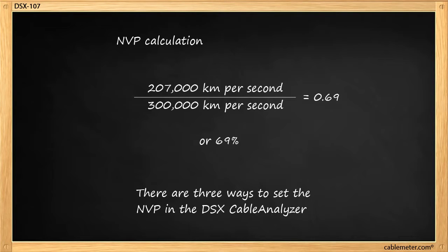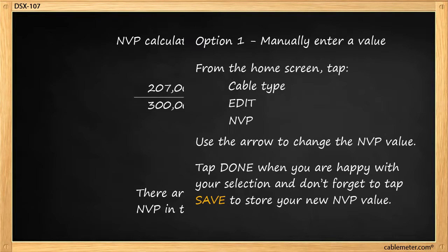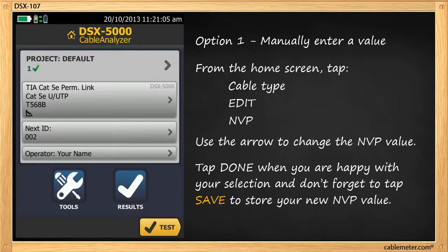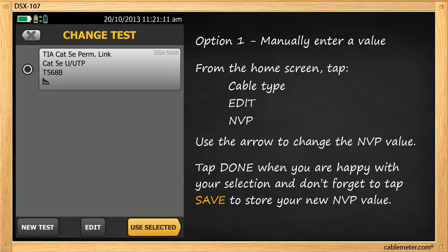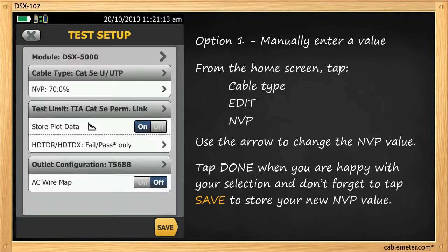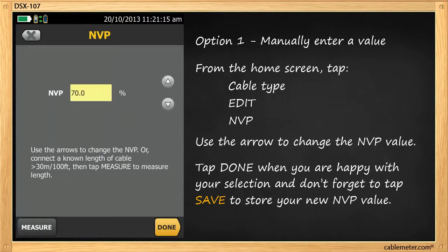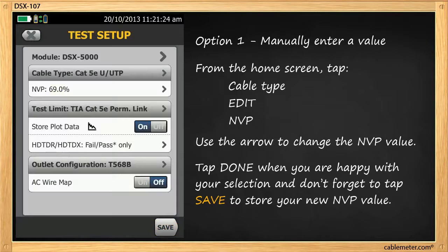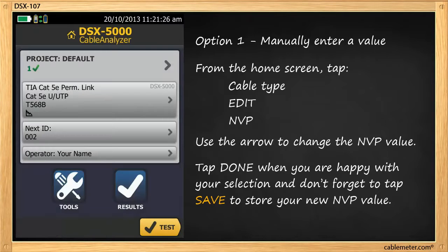There are three ways to set the MVP in the DSX Cable Analyzer. Entering the value is the simplest way. From the home screen, tap where your cable type is. Tap Edit. And where you see MVP, tap. Then using the arrows, change the value to your desired value. Once you're happy with that, tap Done, Save, Use Selected. And now you're ready to begin testing.